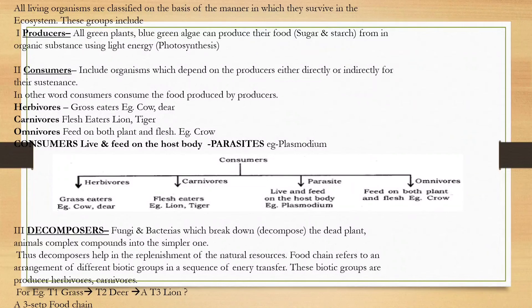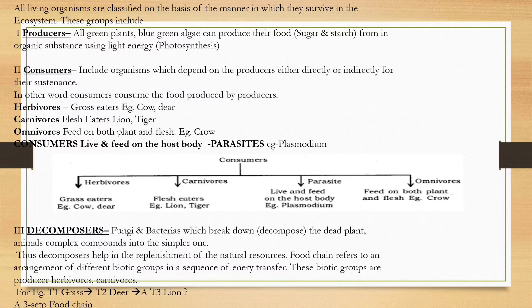Producers are all green plants and blue-green algae. They are the producers and they carry out the process called photosynthesis. Consumers depend on producers directly or indirectly — herbivores are grass eaters and carnivores are flesh eaters.